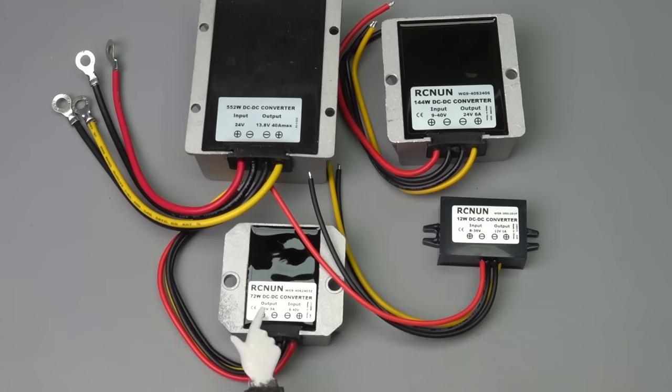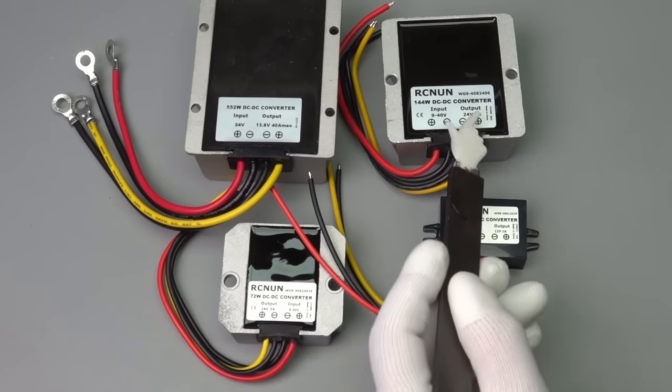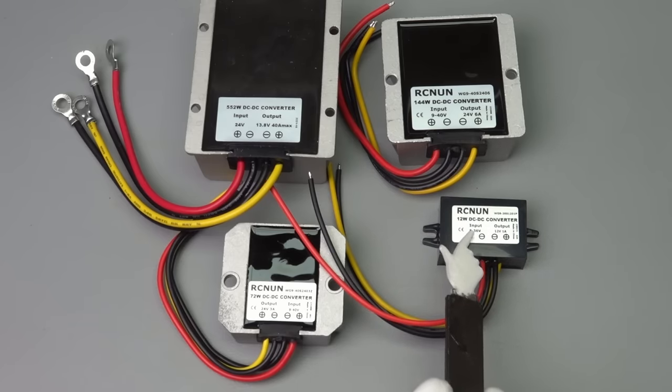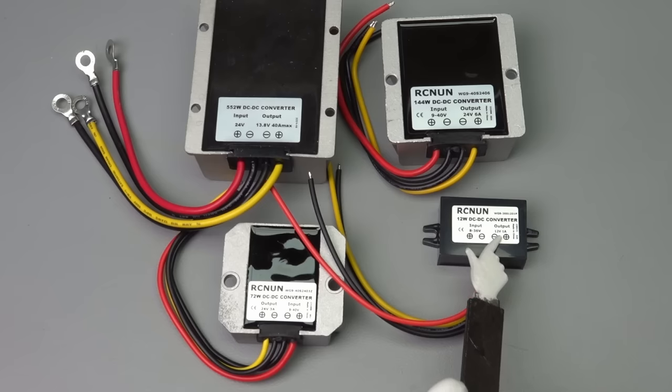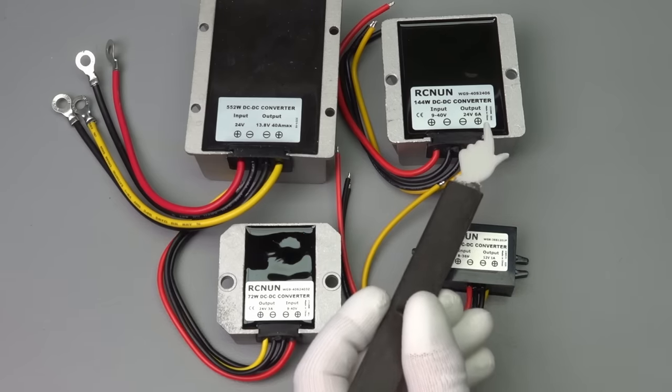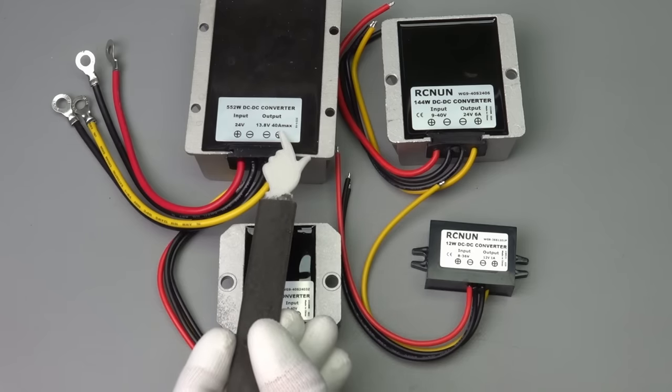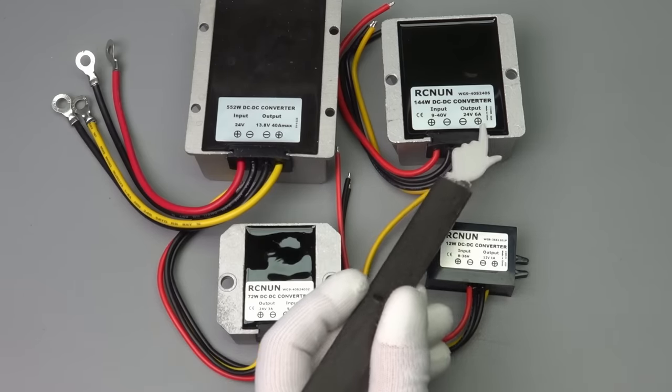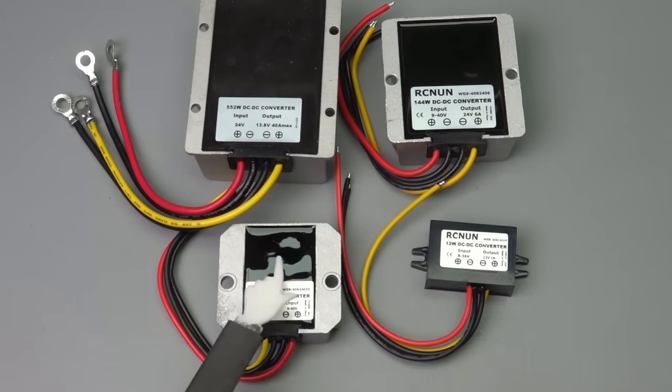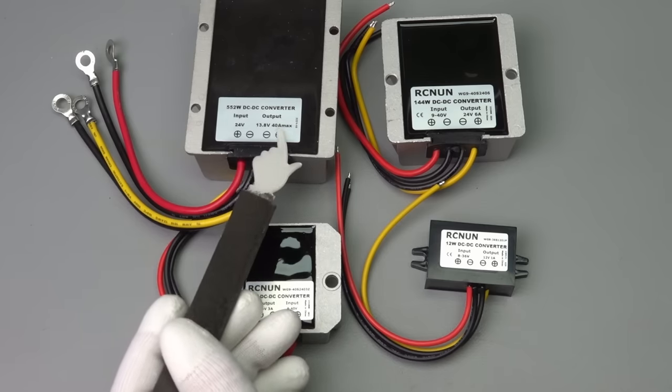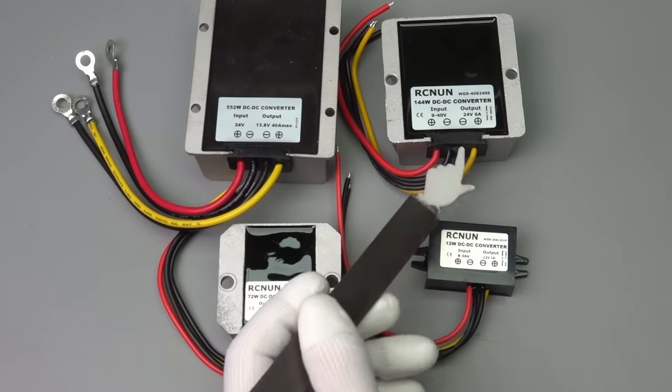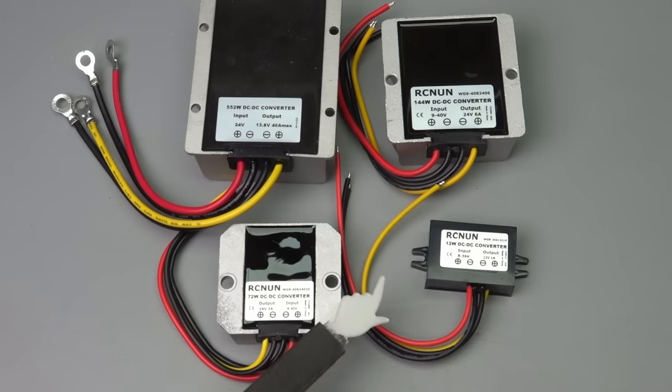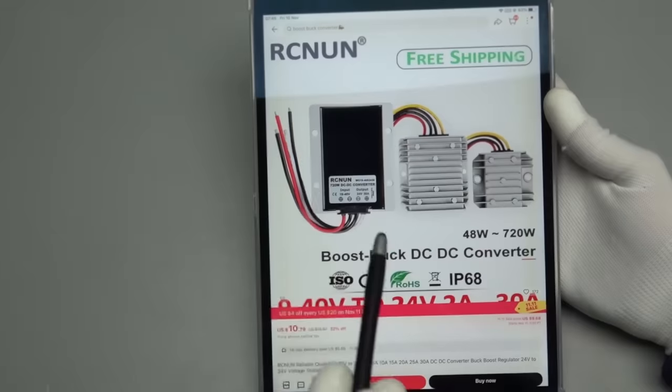The next one is the same 9 to 40 volt input, 24 volt output, but only 3 ampere. This is 6 ampere. And this one is 8 to 36 volt, and the output voltage is 12 volt at 1 ampere. I probably would not use it for 6 ampere or for 40 ampere. I always have some, I call it Chinese factor. So, I buy a little bit bigger part and then I do not go to the absolute maximum.